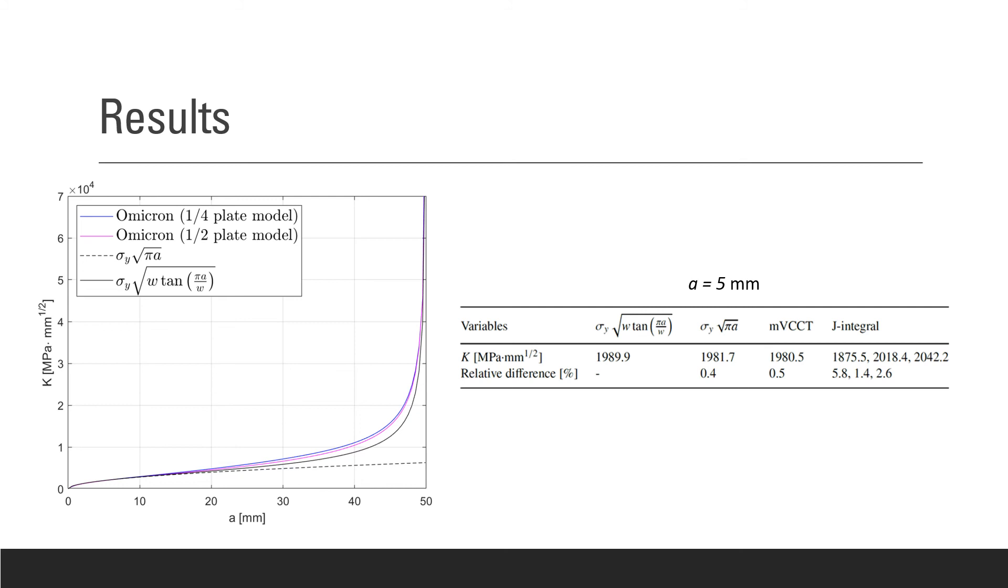So on the right, we have a table for when the crack's length equals 5 mm. We have the results here on the table for MVCCT. We also have it for J integral for the three contours that were defined. And we can see a relative difference to the analytical solution of 0.5% for the MVCCT and a maximum of 5.8%. But this value is for a contour defined really close to the crack tip, so it should be ignored. And the real values of relative difference is 1.4% and 2.6%. So both procedures give us really good results, but the MVCCT gives us the best results.